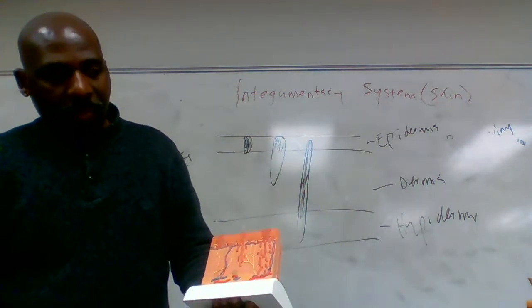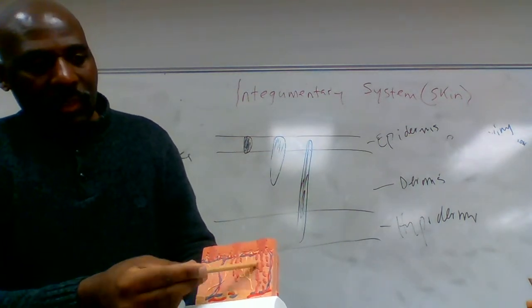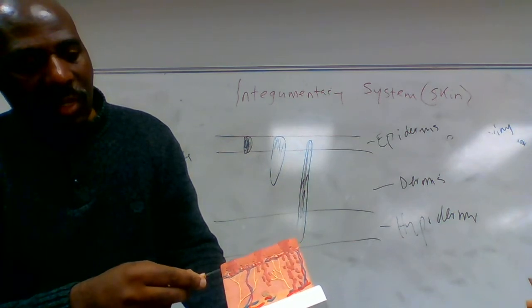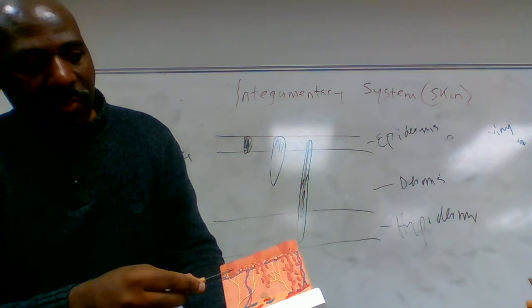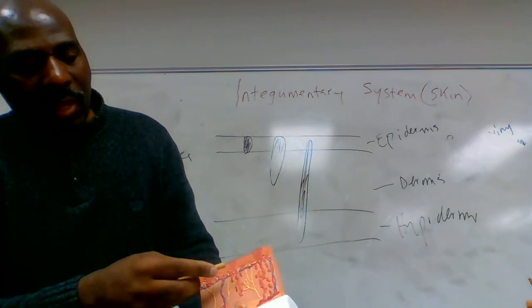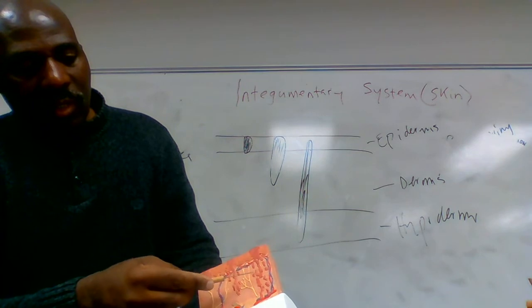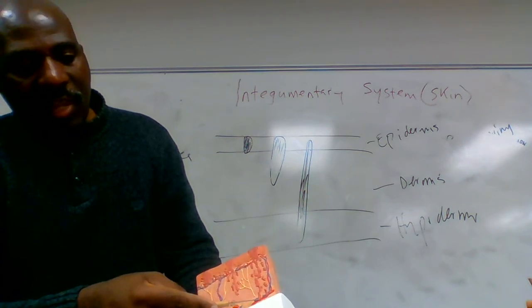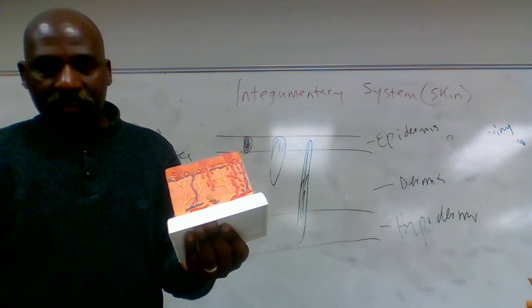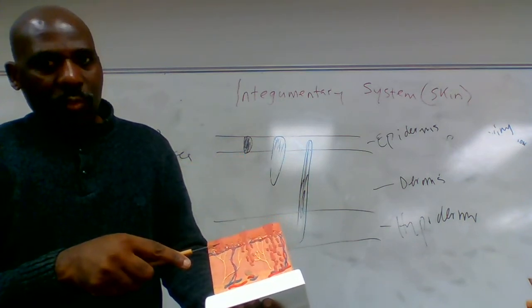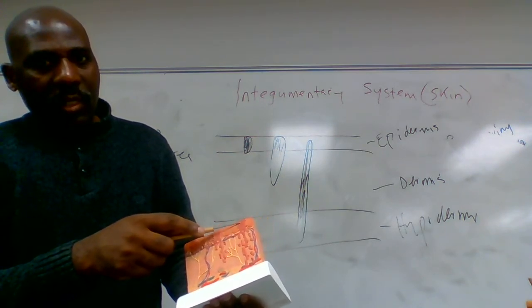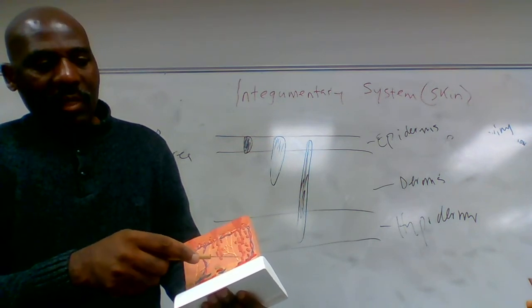Looking at this model, you can see the burns illustrated here. This one is limited to the epidermis — a first degree burn. This one moves from the epidermis down into the dermis — a second degree burn. And this one starts from the epidermis, goes across the dermis, and ends in the hypodermis — a third degree burn.